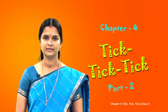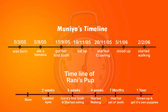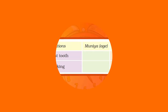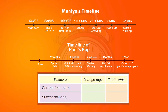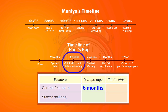Now let us compare the timelines prepared for Muniya and the pup. Here is a table. You have to fill the table with the help of the timelines to compare how they were growing. When did Muniya get her first tooth? When she was six months old. What about the puppy? When it was only three weeks old.